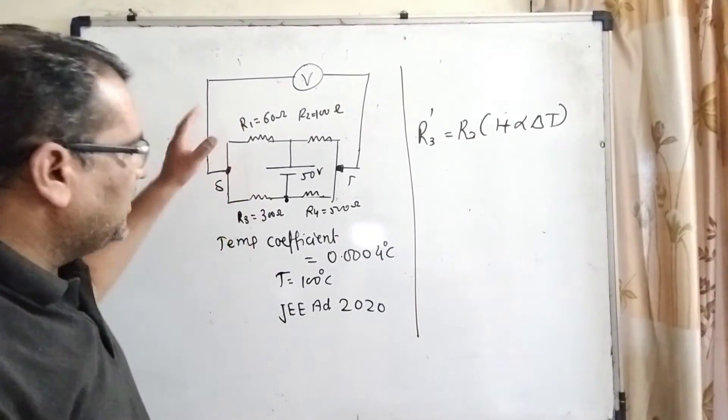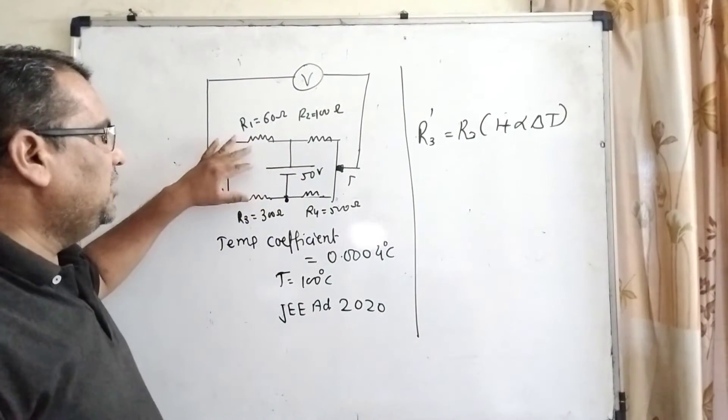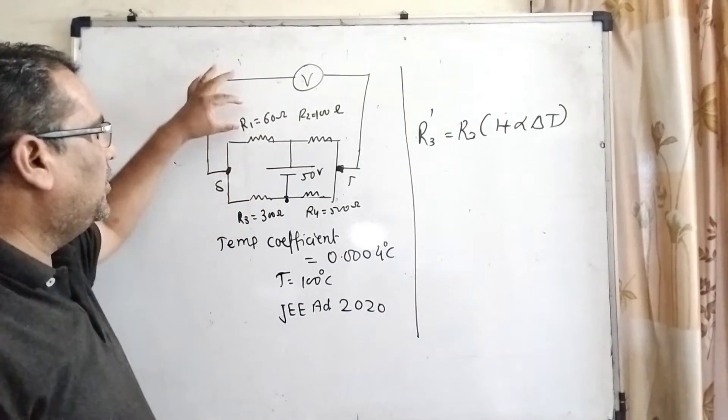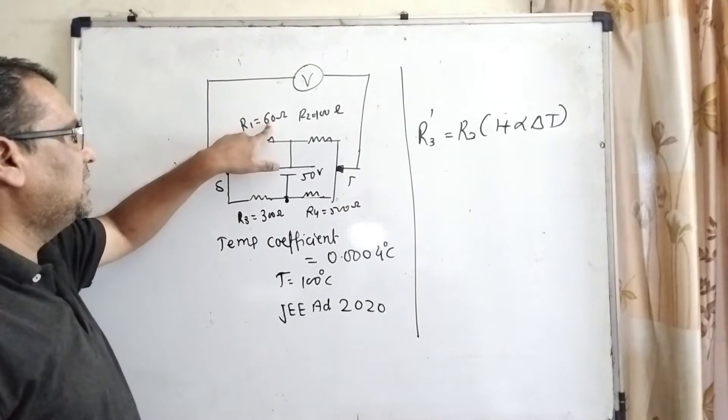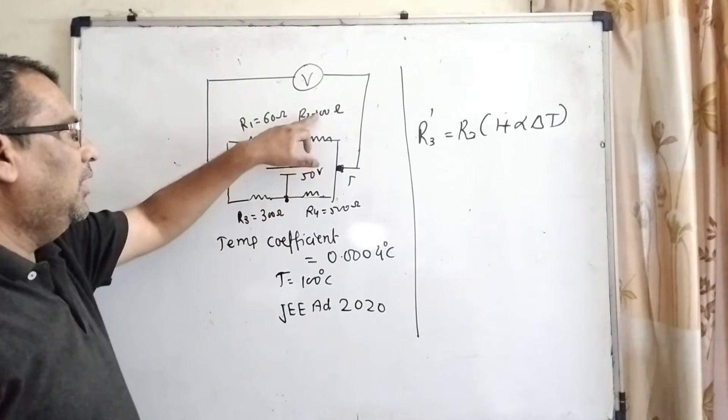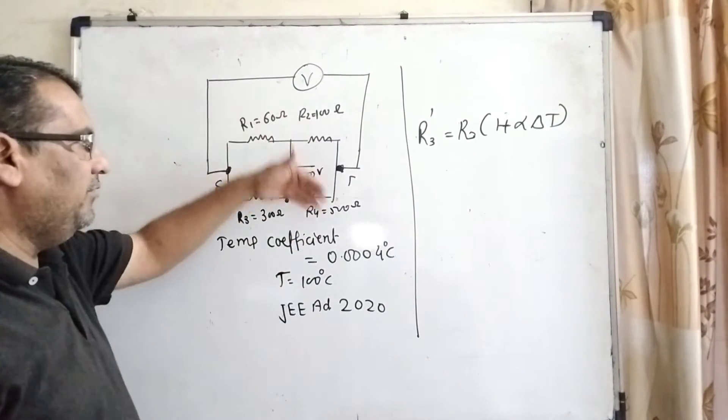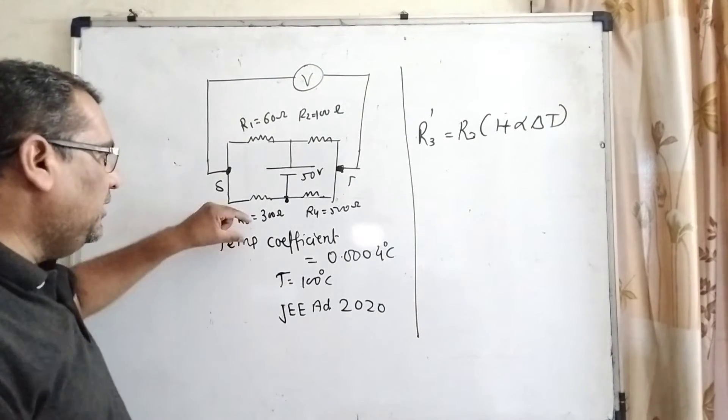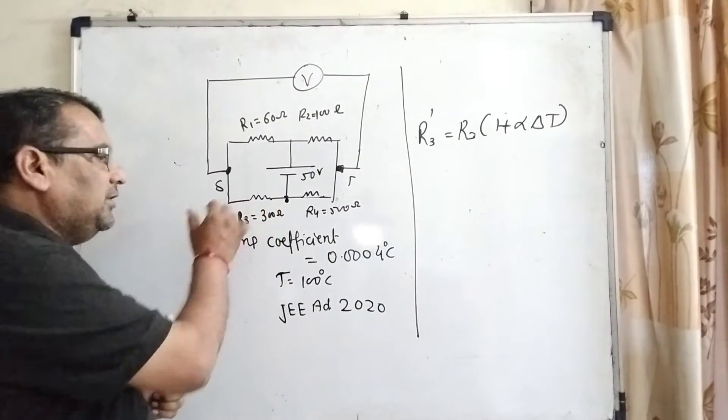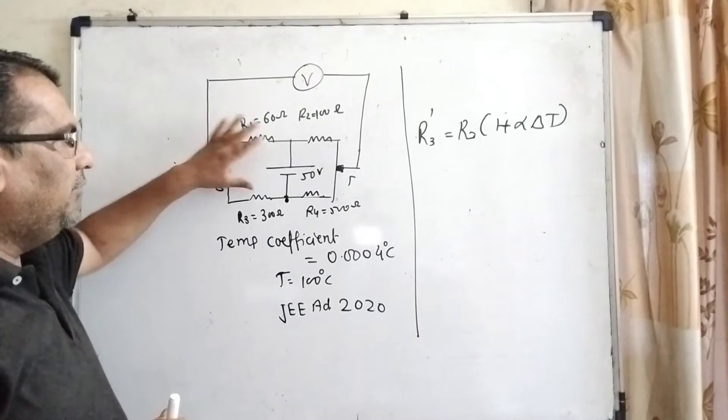Now you can see initially this arrangement is a Wheatstone arrangement because here you can see 60 ohm, 300, 100, and 500, which gives a 1 by 5, 1 by 5 ratio. But when the temperature increases for R3, it will be changed.